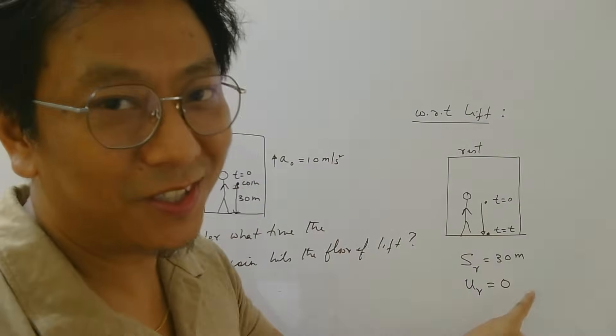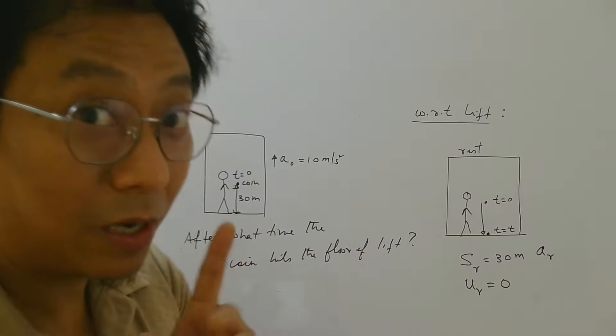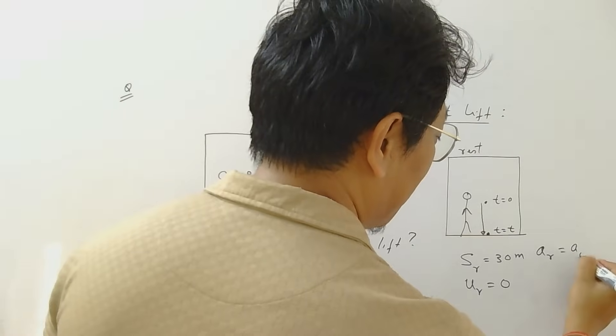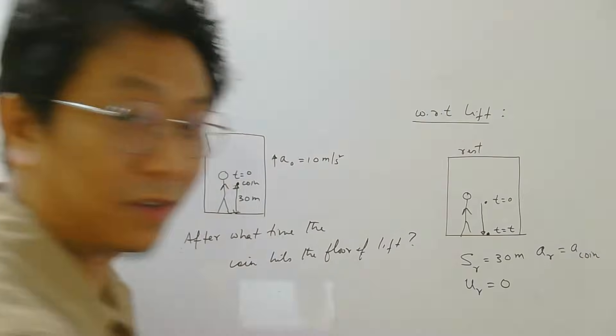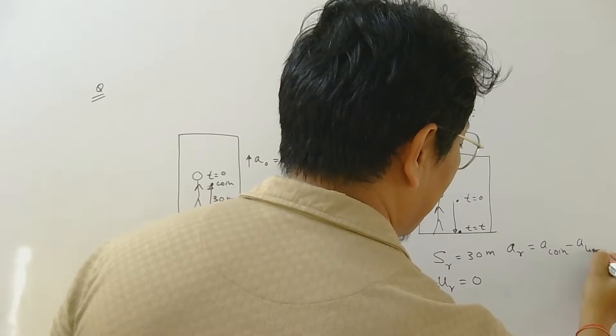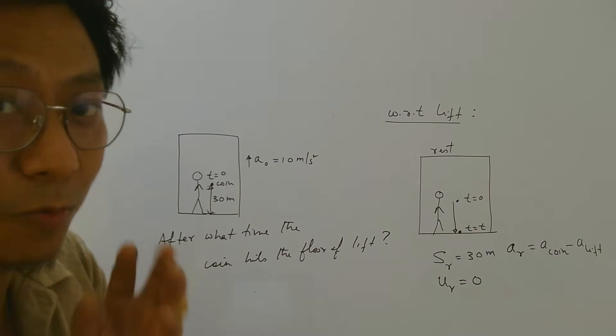What about acceleration of the coin with respect to lift? Be careful about this. So formula for this is acceleration of coin with respect to ground minus acceleration of lift. Now this is formula, while substituting we have to be careful with direction.